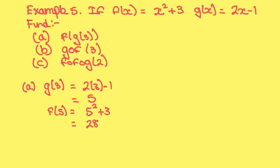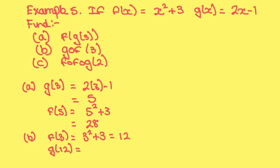Part b: find g of f of 3. So the first thing you do is f of 3, which equals 3 squared plus 3, which is 9 plus 3, equals 12. Then you do g of 12, which equals 2 times 12 minus 1, which equals 24 minus 1, which is 23.